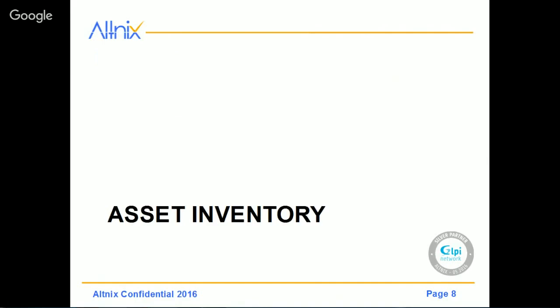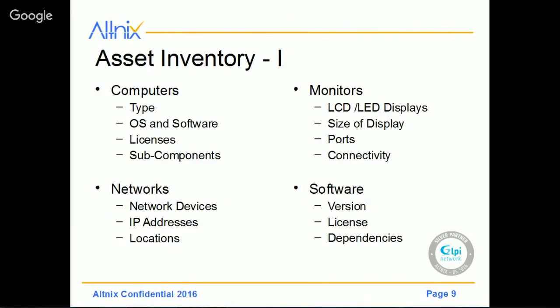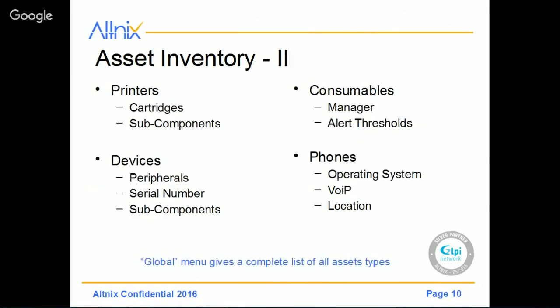The first one to talk about is the Assets menu, or Asset Inventory menu. Under Asset Inventory, you can maintain IT asset inventory for different types of assets commonly found in your IT environment. This includes computers, networks, monitors, and software. We also have printers, devices and peripherals, consumables, and phones. Under Consumables, you'll be tracking items like printing paper, stationery, notepads, pens, and other items consumed on a daily basis that need to be refilled.